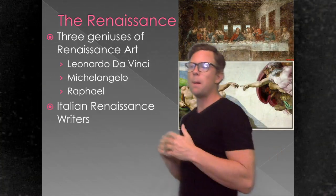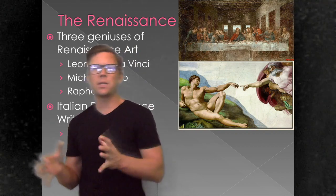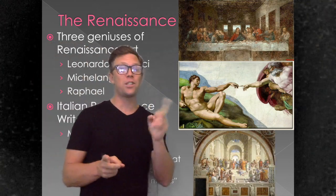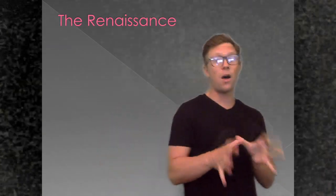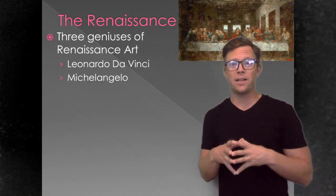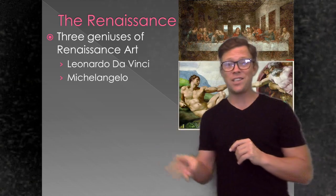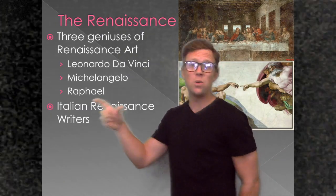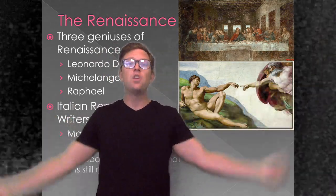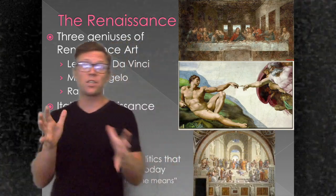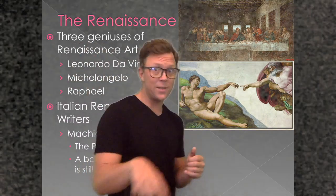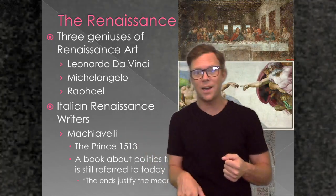We're also going to have incredible writing come out of this time period. Machiavelli wrote a book in 1513 called The Prince, and in it came a political ideology referring to the ends justifying the means. Some people see that as a pretty awful way of governing; others see it as the way to achieve goals. What it implies is that you can lie, cheat, steal, and do whatever you want to get into a position of power, as long as what you do in power ultimately benefits everybody else. This book is still referred to today and used on both sides to make an argument.